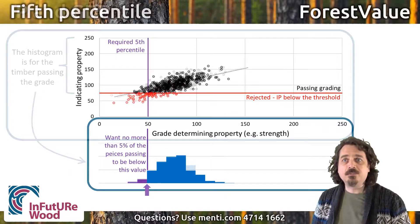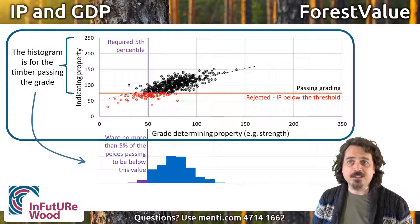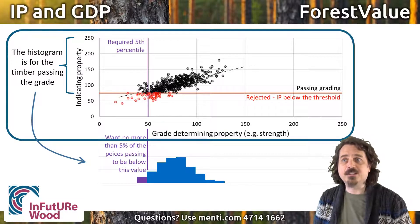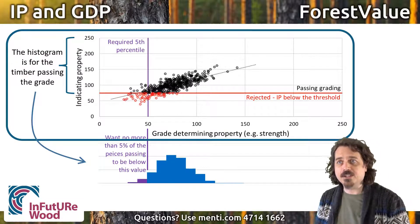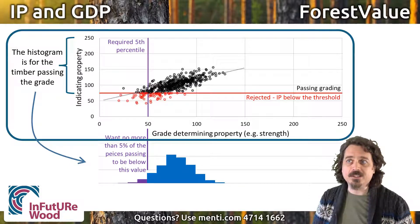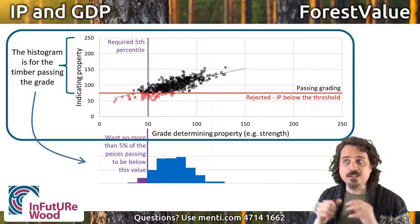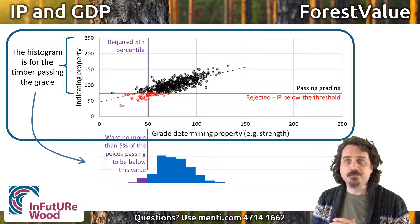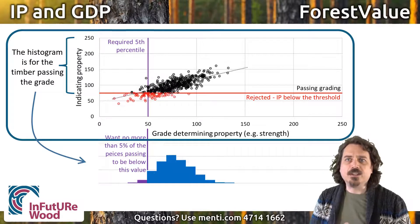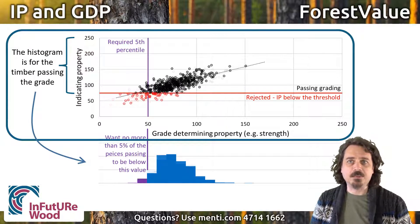With new timber, we make use of information about species and growth area, because both of those affect the link between the things that we measure in grading — the indicating properties — and the things that we are predicting — the grade determining properties. These correlations are more like associations than direct causal relationships.